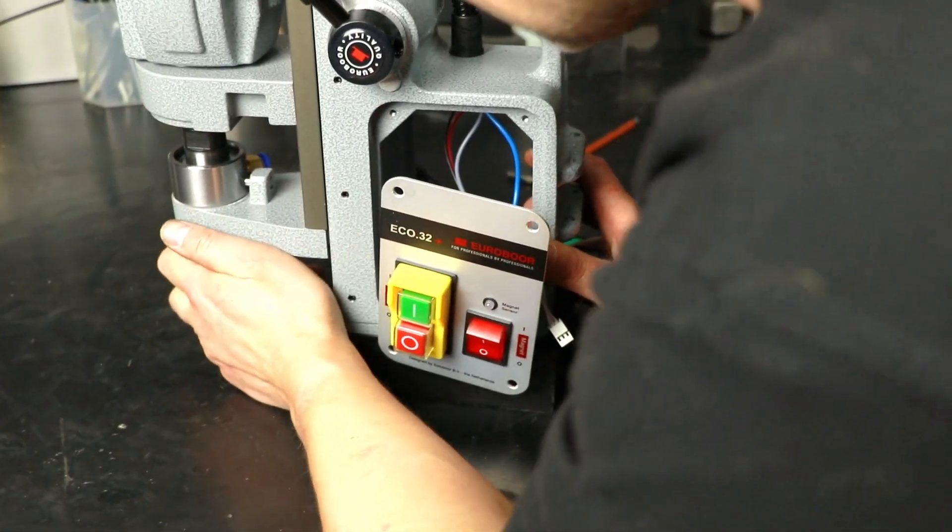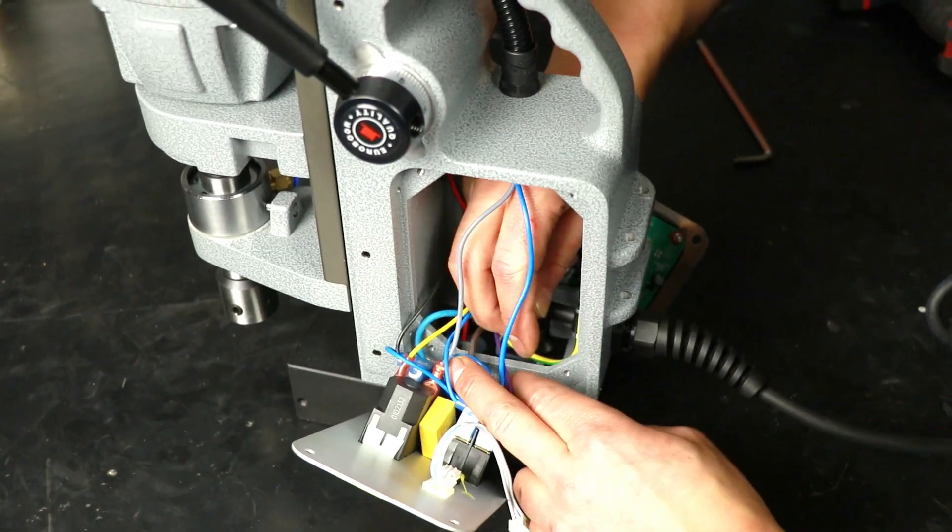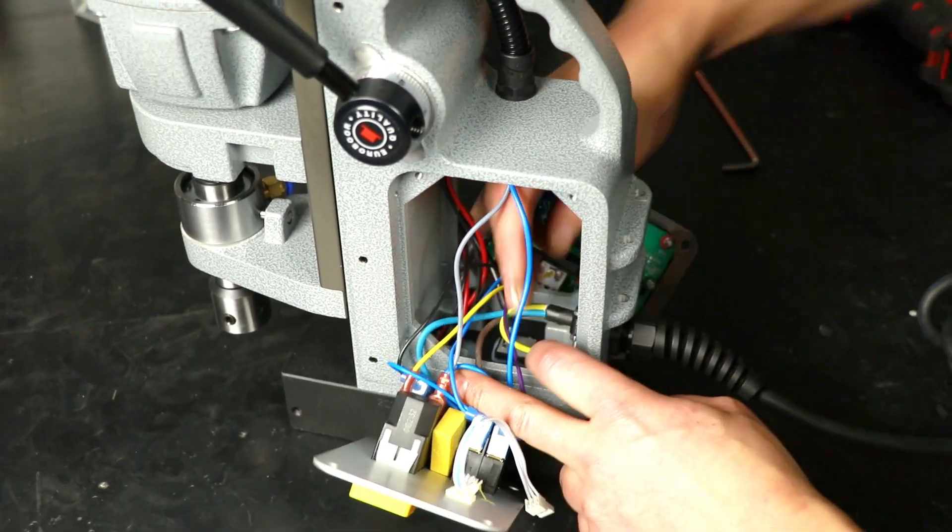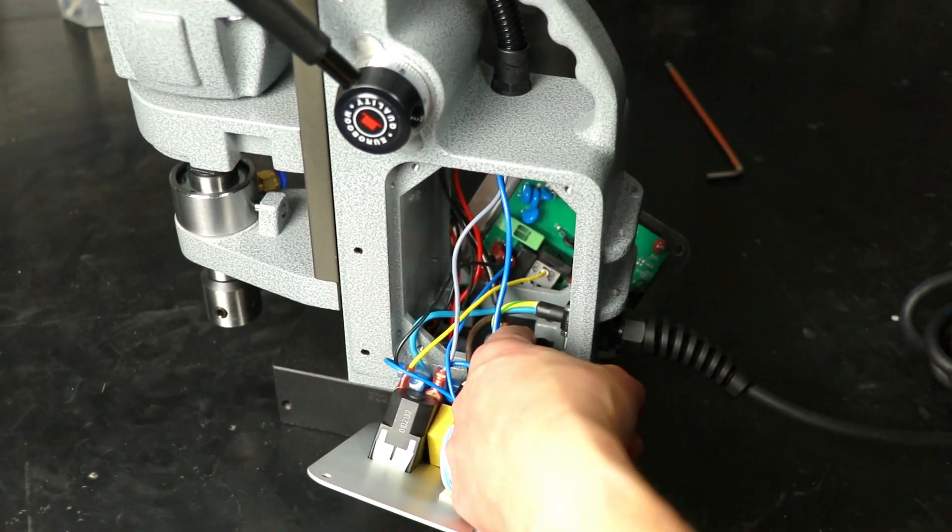Once that's done, align the new magnet with the bolts. Again, make sure the machine doesn't fall forward. Screw the bolts back in tight.